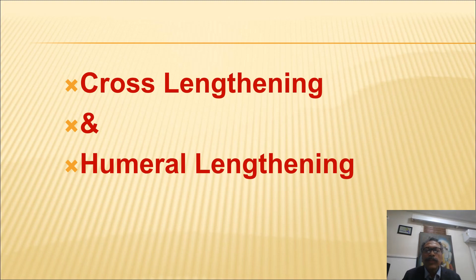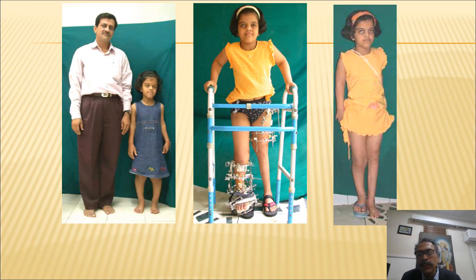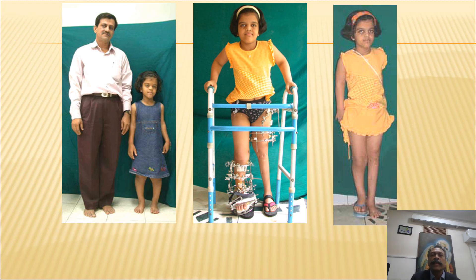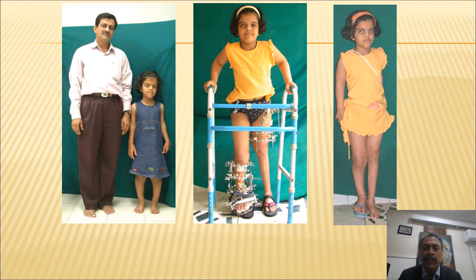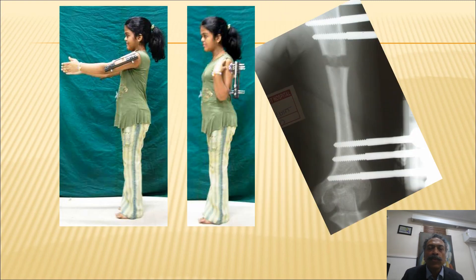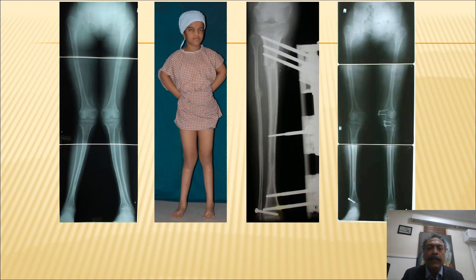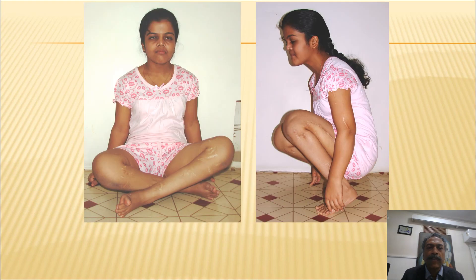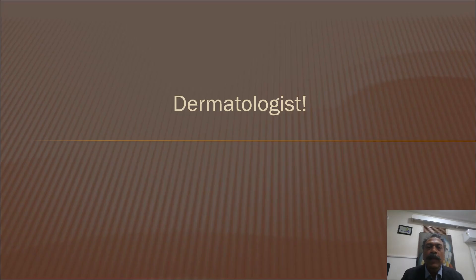The strategies we employ include cross lengthening followed by humeral lengthening, or bilateral tibial then femoral then humeral lengthening. Here is a young lady, daughter of a doctor, who had cross lengthening because parents knew they wanted to go through all four segments. We never perform lengthening of all four segments simultaneously, as it is very difficult for parents to manage nutrition and pain control across four segments at once. She achieved significant length, had humeral lengthening, and a minor valgus deformity was corrected with osteotomy and guided growth. She retains full range of motion in her knees and has successfully completed medical education, now working as a dermatologist.